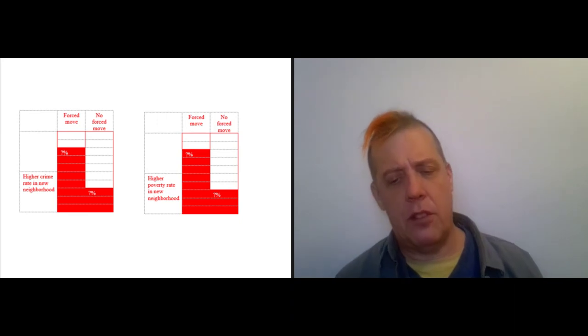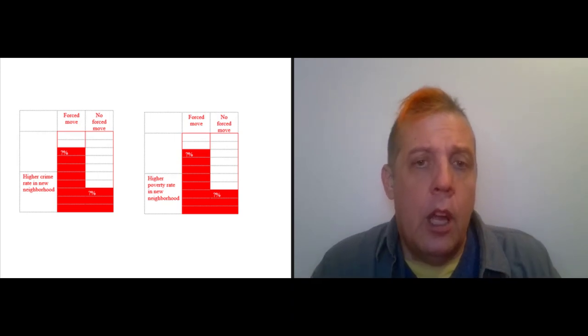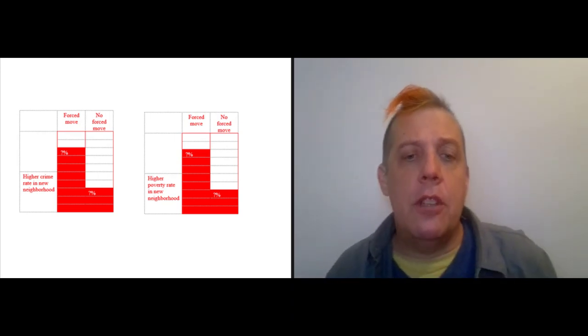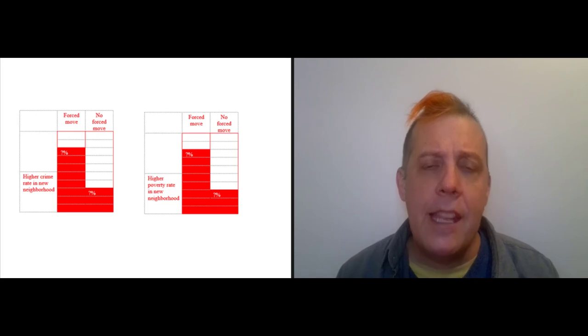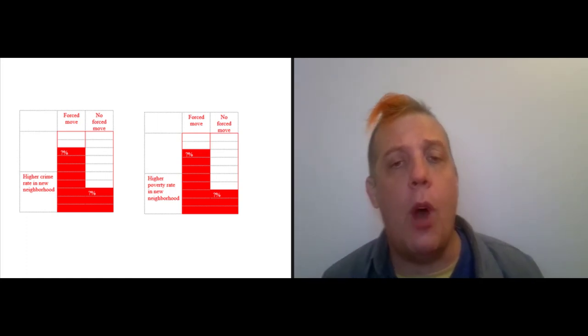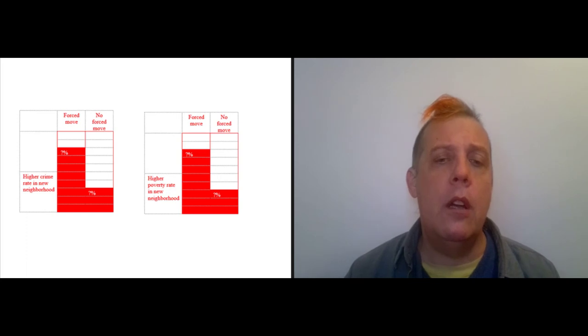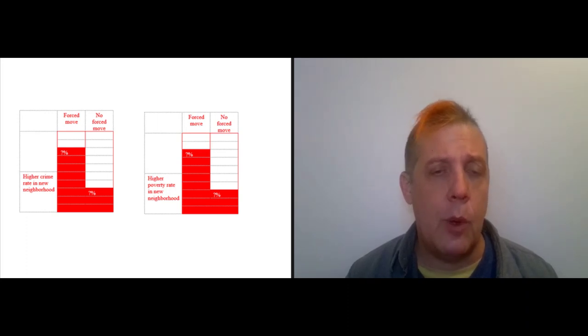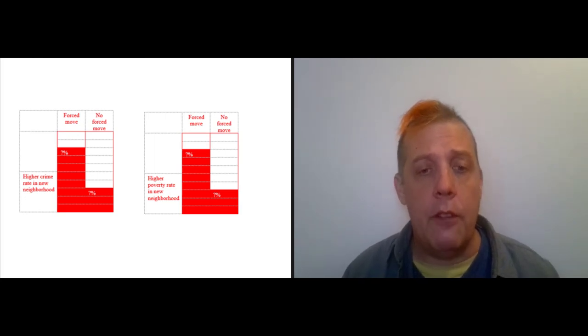Just to circle back to the actual ethical implications of this, the point is that an eviction actually generally leads to two moves. This is what Desmond emphasizes. There's a hasty move that is forced where you go someplace where you don't want to be, and then after that, a second move where you wind up, hopefully, in a better place. What Desmond wants to emphasize is the consequences of eviction and how they resonate throughout a community. They disrupt the lives of individuals and they disrupt the social fabric.